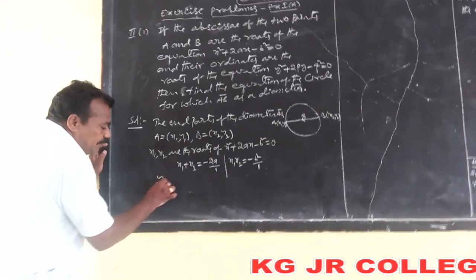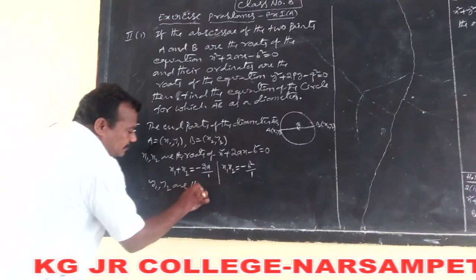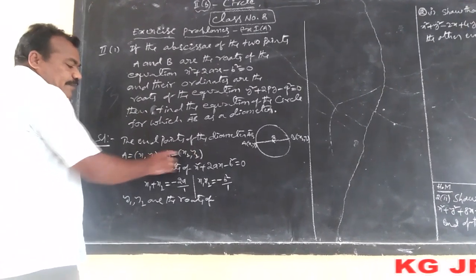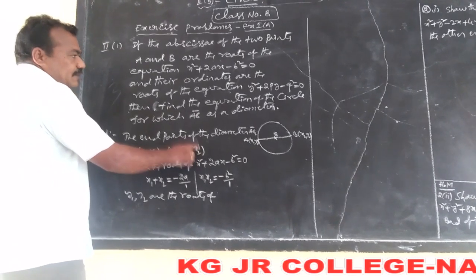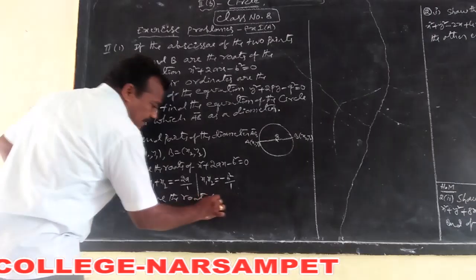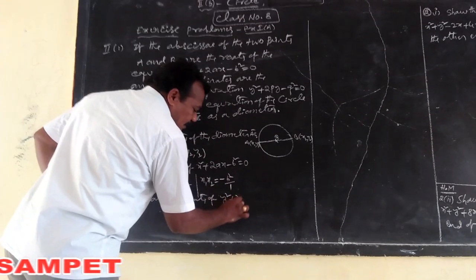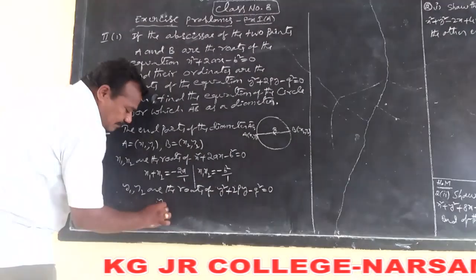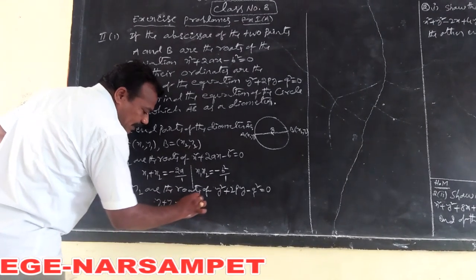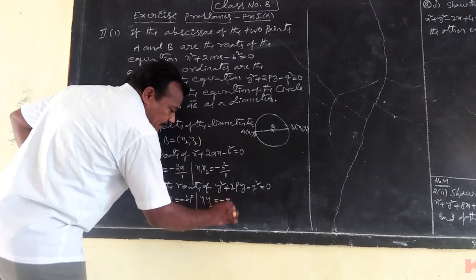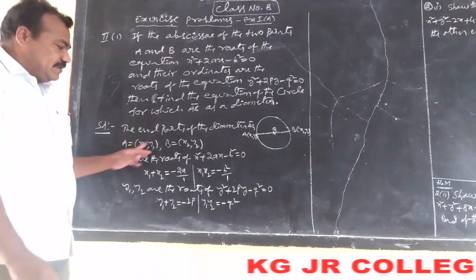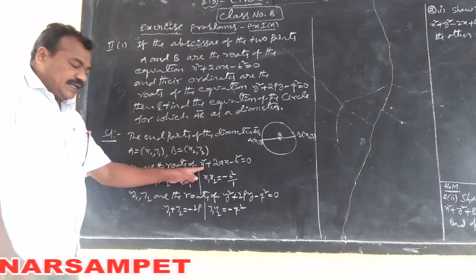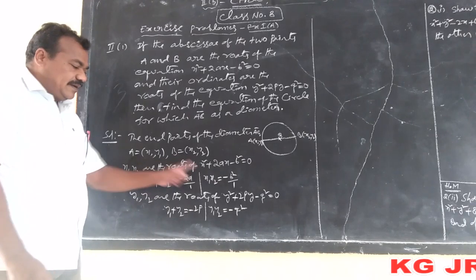Similarly, y₁ and y₂ are the y-coordinates of the end points of the diameter, and they are the roots of y² + 2py − q² = 0. Sum of roots: y₁ + y₂ = −2p. Product of roots: y₁·y₂ = −q².